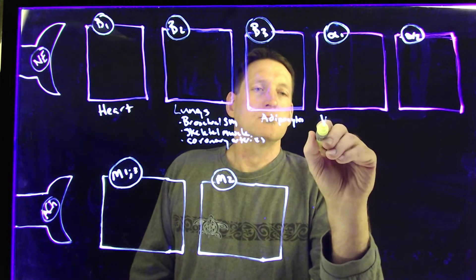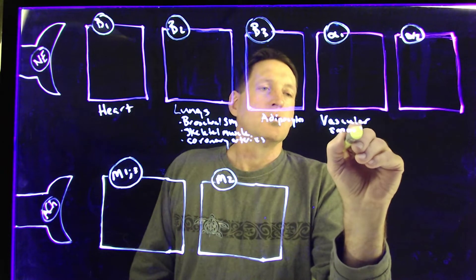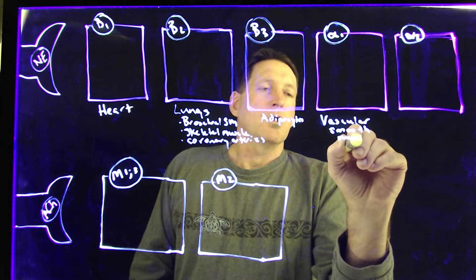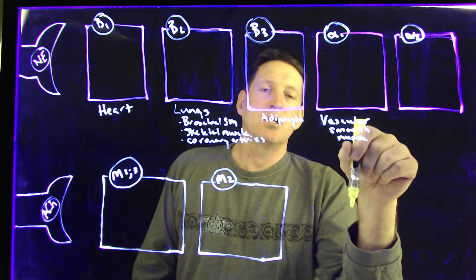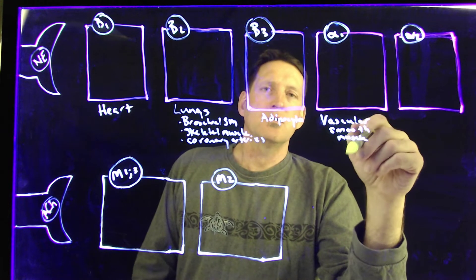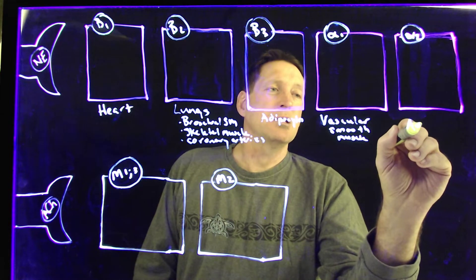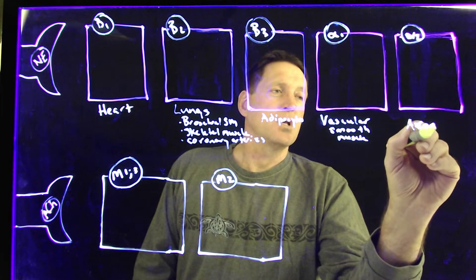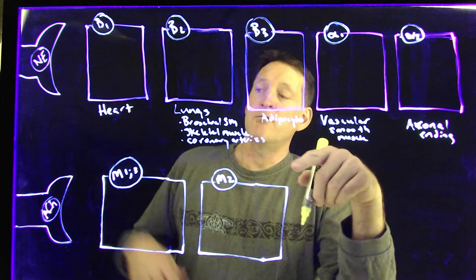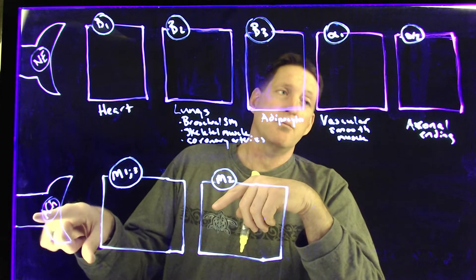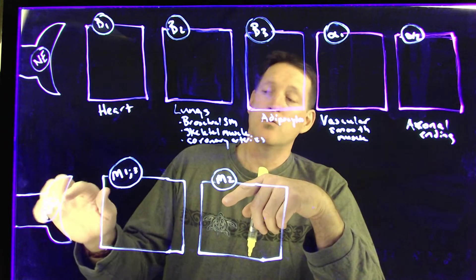Alpha-1 receptors are found on vascular smooth muscle, primarily on the vessels supplying the mesentery — the vessels that supply the guts and viscera. Alpha-2 receptors are found on axonal endings within the GI system and also in the central nervous system, specifically in the sympathetic outflow. These are axonal endings of the postganglionic fibers in the parasympathetic nervous system, and the sympathetic system will help control the decreased release of ACh.